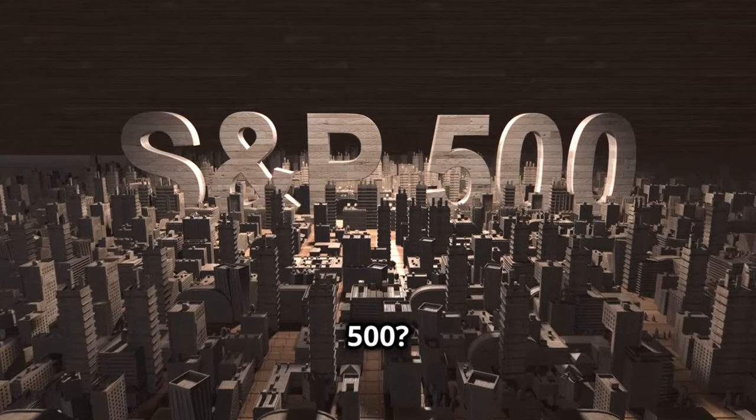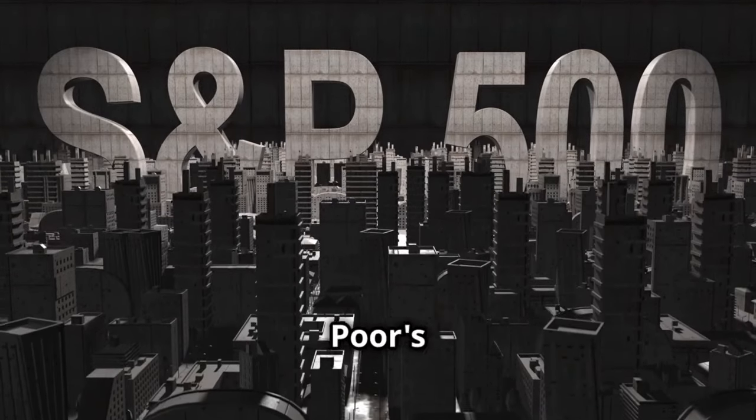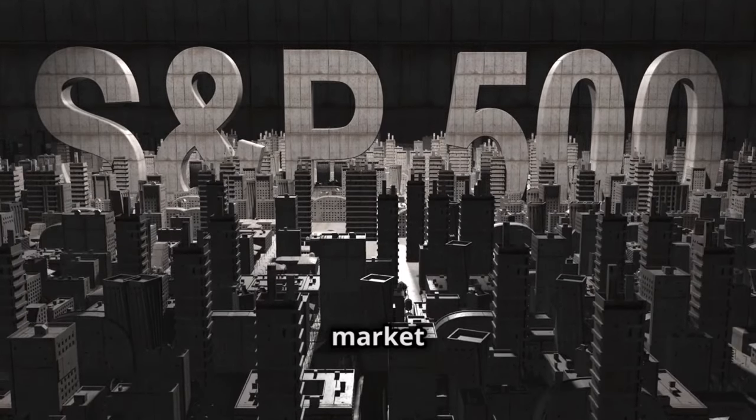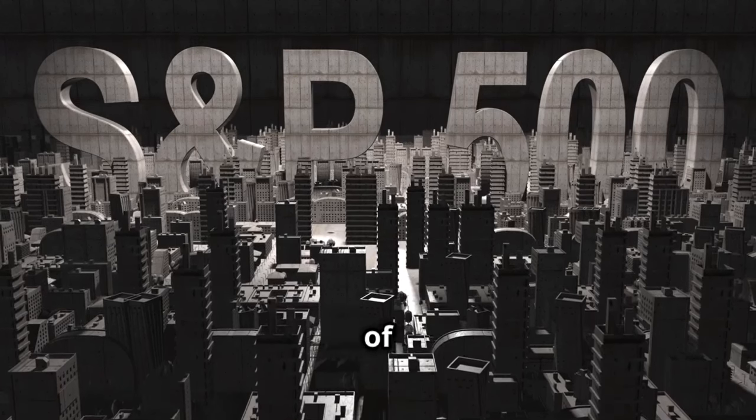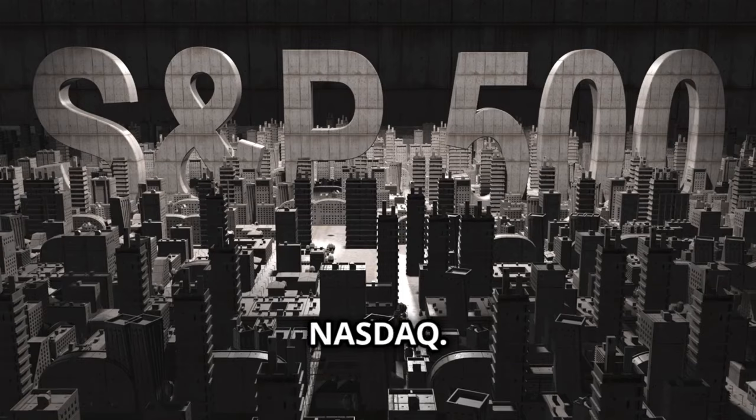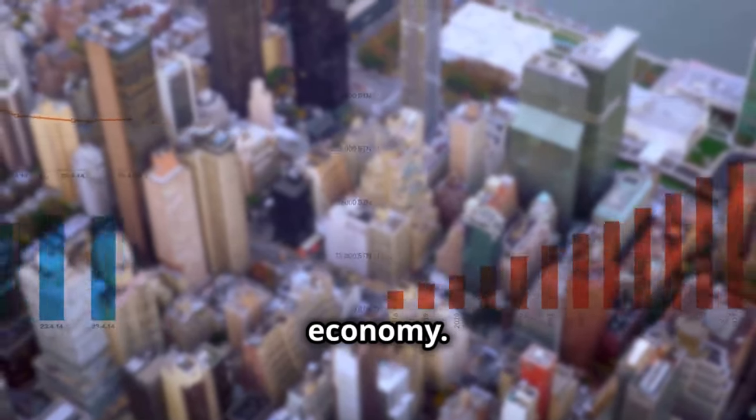What is the S&P 500? The S&P 500, short for the Standard and Poor's 500, was introduced in 1957 as a stock market index that tracks the performance of 500 major U.S. companies listed on the New York Stock Exchange and NASDAQ. It's designed to represent the overall composition of the U.S. economy.